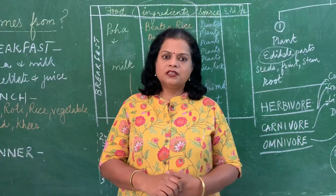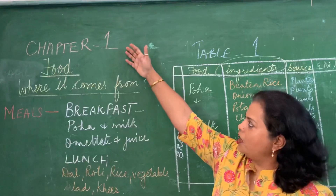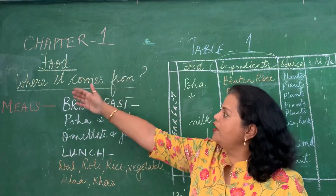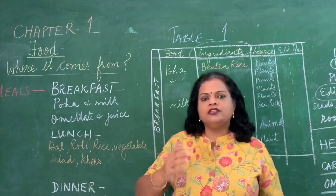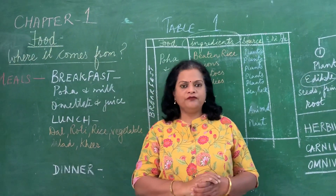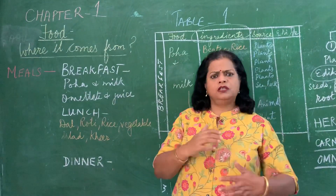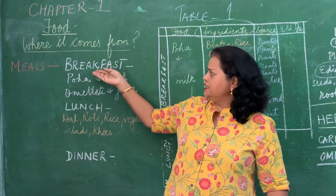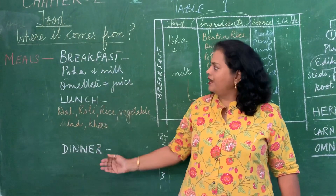So today we start with lesson one from chapter one — what class says — food, where it comes from. To get energy, we eat different types of meals and we are divided for other types of ingredients. The meals we take: first meal is breakfast, then lunch, and then dinner.